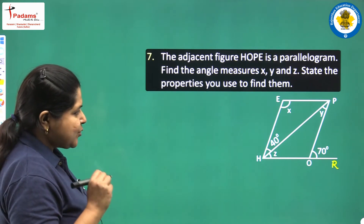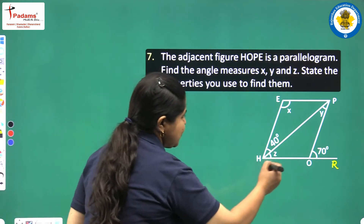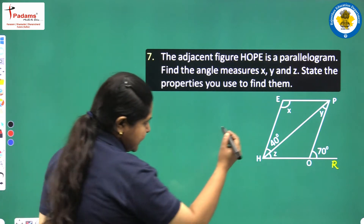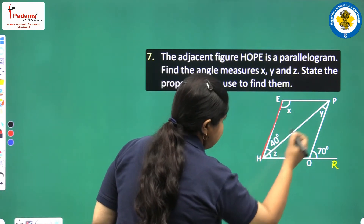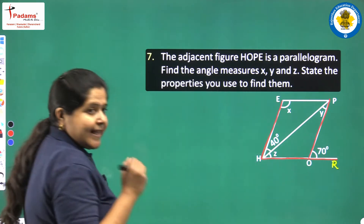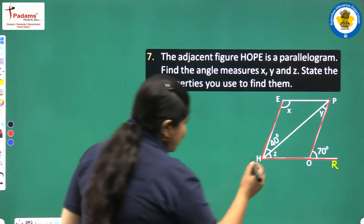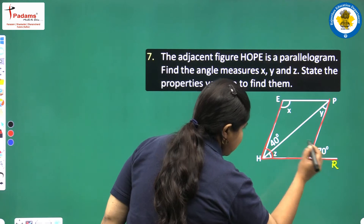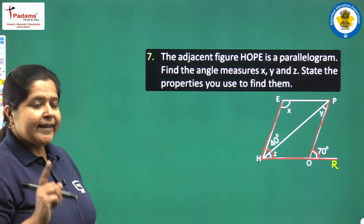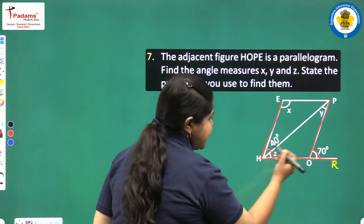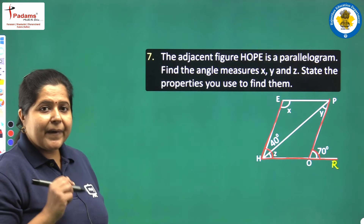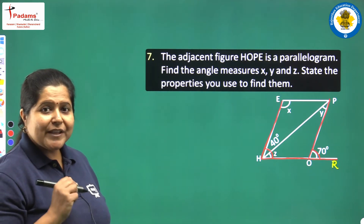I would like to draw your attention towards these two sides EH and PO. These two sides are parallel to each other and side HP is a transversal here. These two angles — angle EHO and angle POR — are forming a pair of corresponding angles and so they will be equal.